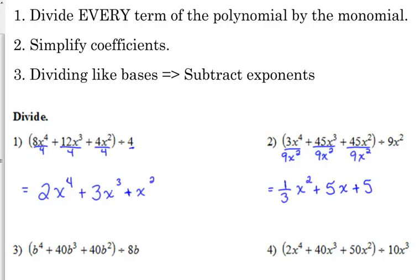45 over 9, 45 divided by 9 is 5. x cubed over x squared is x. We've got 45 divided by 9 again, but then x squared over x squared is 1, so that final term doesn't have a variable.